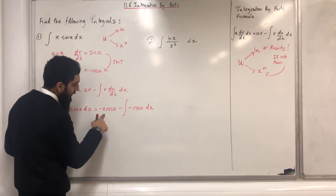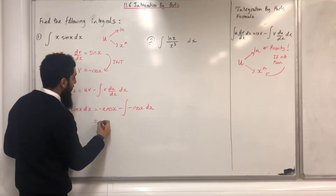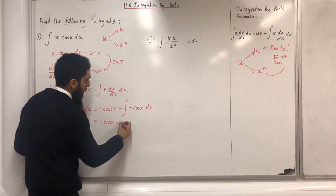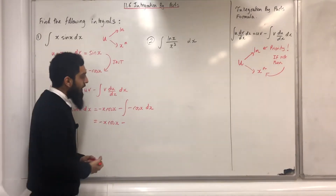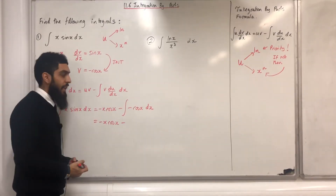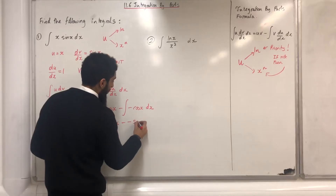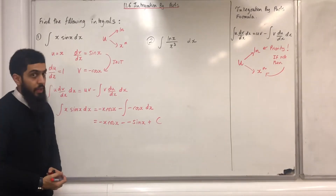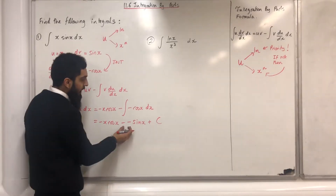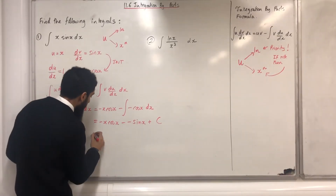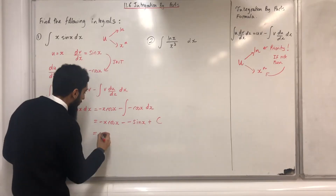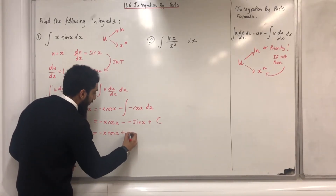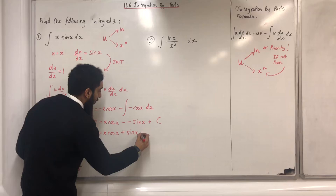The first term remains the same: minus x cos x. Minus, integrating minus cos x gives minus sin x. Plus c, the constant of integration. These two negatives become positive, so I can rewrite this whole thing as minus x cos x plus sin x plus c.